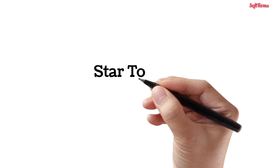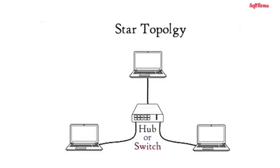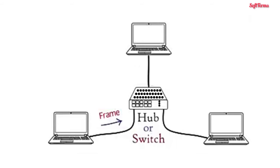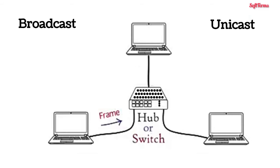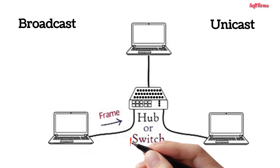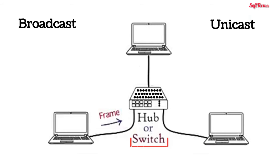Next is star topology. In star topology, computers connect to the central device — a switch or a hub — with point-to-point communication links. Point-to-point connections means there is a dedicated link or cable between two devices; other devices cannot use it. In this topology, if one computer wants to send a data frame to another computer, it is first routed to the central device. The central device then either broadcasts or unicasts the received data frame towards the destination computer based on the type of central device used.